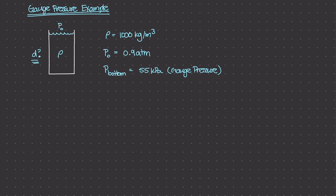There are a few things to keep in mind. Remember, gauge pressure is equal to absolute pressure minus 1 atm, and this 1 atm is 101.3 kilopascals — the standard atmospheric pressure at average sea level.